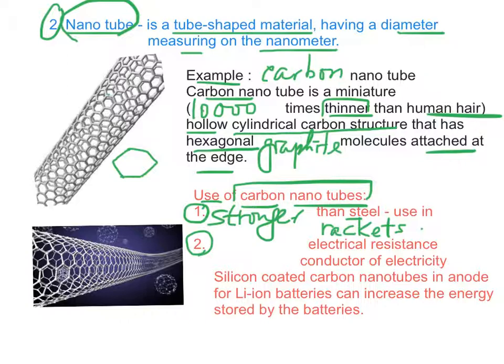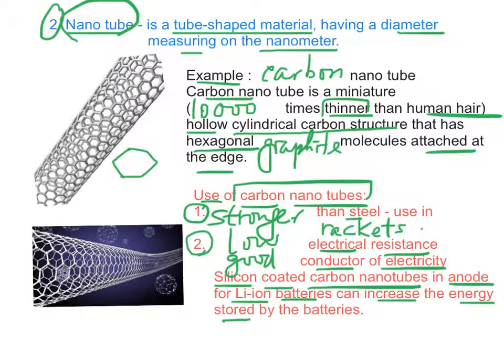Second, since carbon nanotubes have low electrical resistance, therefore it has good conductor of electricity. By using silicon coated carbon nanotubes in anodes for lithium-ion batteries, can increase the energy stored by the battery.